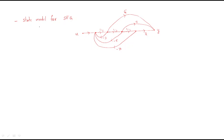Hello everyone. In this session we will discuss the state model from a signal flow graph. We already discussed that different models are available. Given the signal flow graph model, first we have to verify the transfer function, and from this transfer function we will get the state space model. Here in the model, u is the input and y is the output.